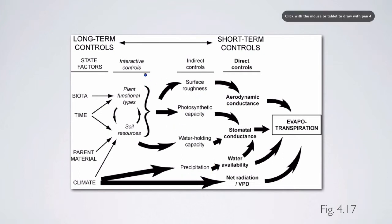Now, we can even go more distal and think about the interactive controls. And when we think about these factors, such as surface roughness and water holding capacity, the interactive controls really are the plant functional types, or the plant species that you have there, and the soil resources that are available. The more nitrogen available you have in soil, if it's a limiting factor, the greater the photosynthetic capacity of the vegetation, which is then going to feed forward to higher evapotranspiration.